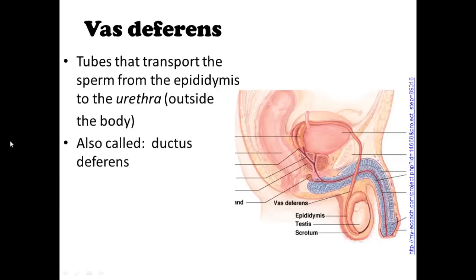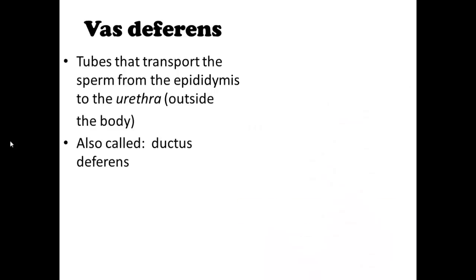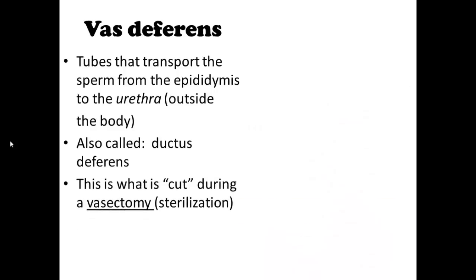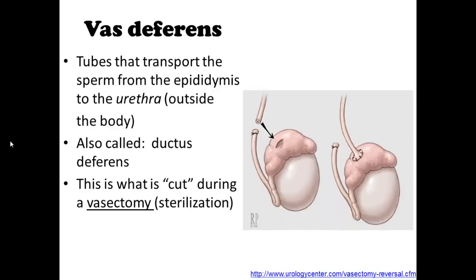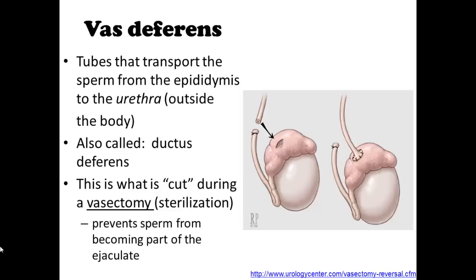The vas deferens is also called the ductus deferens. This is the structure that is cut during a vasectomy — a sterilization procedure for males so they can no longer have children. Here's an image showing the vas deferens being tied off, cut, and sutured. This procedure can actually be reversed by reattaching it. A vasectomy prevents sperm from becoming part of the ejaculate.